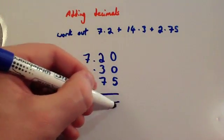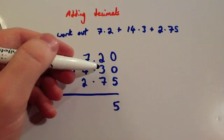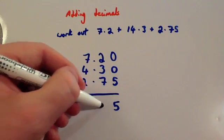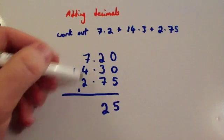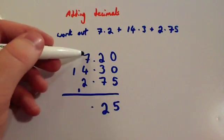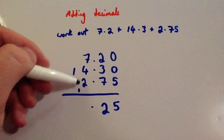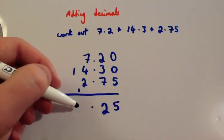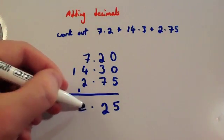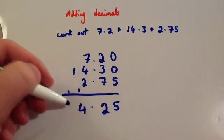So, 0 plus 0 plus 5 is 5. 2 plus 3 is 5, plus 7 is 12, so put the 2 down, carry the 1. Decimal point, make sure you put a point there. 7 plus 4 is 11, plus 2 is 13, plus 1 is 14. Carry the 1, and 1 plus 2 is 4.